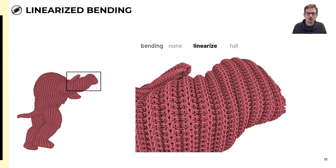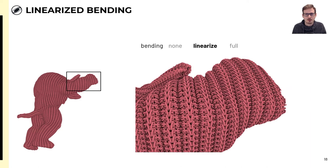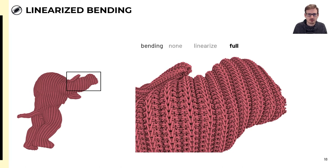And so we can compare no bending versus our linearization, and we see that we do get the tightening behavior in curved regions of the pattern. And similarly, we compare the linearization against the full bending model. Interestingly, the linearization tightens the knits a bit more than the full bending model, but there are also some caveats to what the full model is, which we detail in our paper.